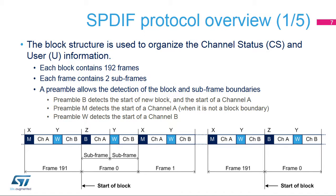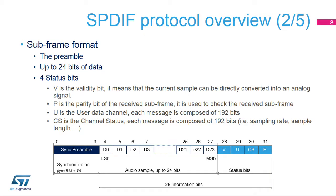They mainly describe the physical and logical structure of the digital audio stream. In IEC-60958, the digital audio stream is organized in a block structure in order to decode the channel status, or CS, and user, or U, information. Each block contains 192 frames, and each frame contains two subframes. The SPDIF-RX is able to recognize the start of block, the preambles, and the frame boundaries.